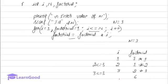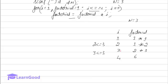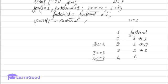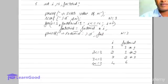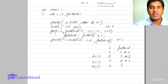Next, i becomes 4. But 4 is less than or equal to 3 is false — the condition is false. When condition expression 2 is false, the loop exits. Then display the factorial value using printf: factorial equals %d, and pass the factorial variable. Then stop the main by returning 0.